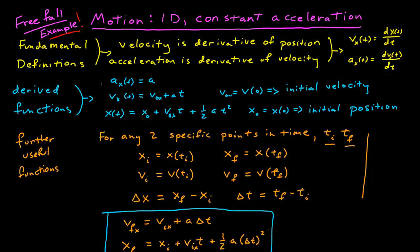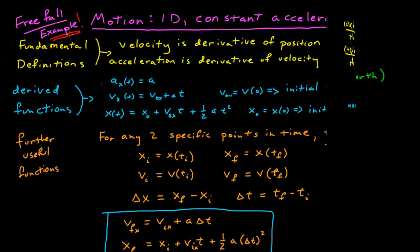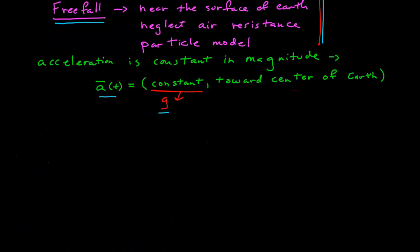In this module, I want to do an example of a particle in free fall. I'm going to keep the example very simple because what I really want to highlight is choosing a coordinate system and also when you have to use logic to find answers to problems and not just the math. The simple example is: I'm going to drop a ball from a height h, and I want to know how fast it is going when it hits the ground.